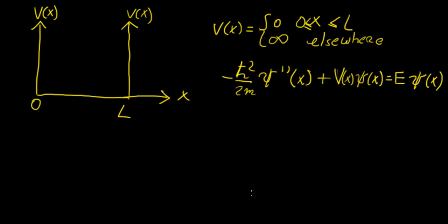In this video we're going to be solving the problem of the particle in a one-dimensional box, more formally known as the problem of the infinite square well of length L. We have the one-dimensional time-independent Schrödinger equation. What makes this an infinite square well is that we have a potential barrier on both sides, at zero and L, that goes to infinity, so the particle's wave function is confined within these two boundaries.